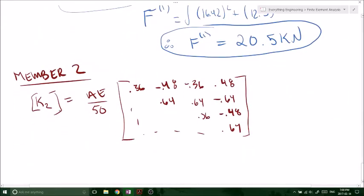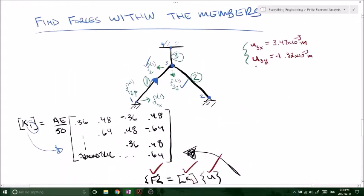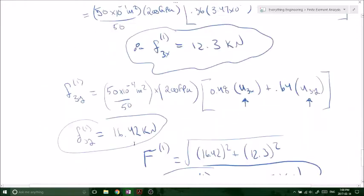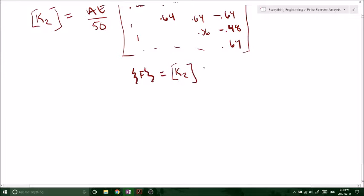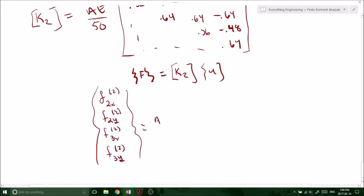Remember with our K2, we are looking at standing at node 2 and we're looking up at node 3, right? So then that shows us, that is going to be U2X, U2Y, U3X, U3Y. So let's write this out in the form of K2 times our displacement vector. F2X due to 2, F2Y due to 2. Same thing, guys, AE over 50.